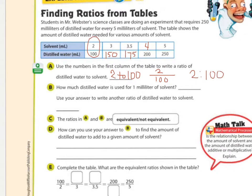How much distilled water is used for 1 milliliter of solvent? The table didn't go that low. About half of 2 is 1, so what's half of 100? 50. This is saying that for every milliliter of solvent, you're using 50 milliliters of water. Use your answer to write another ratio of distilled water to solvent. So that would be 1 to 50.